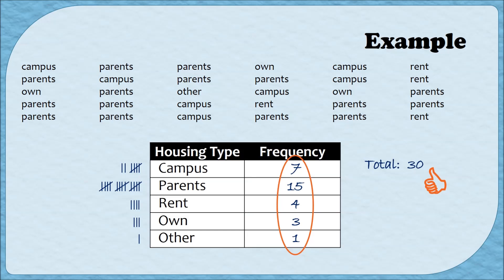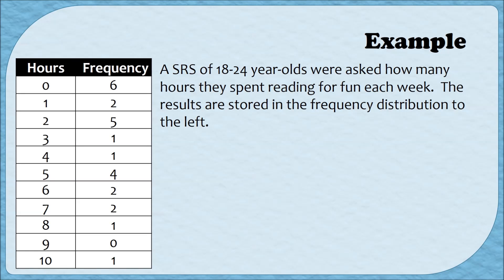Now let's look at an example where we're given a frequency distribution and have to interpret information from it. A simple random sample of 18- to 24-year-olds were asked how many hours they spend reading for fun every week, and the results are in the frequency distribution shown. In the previous example the data was qualitative — categories like campus, rent, parents, own, other. In this example the categories are quantitative — an amount of hours — so the data is quantitative and must be treated a bit differently.